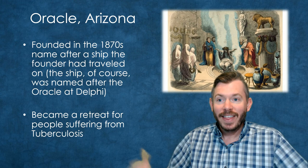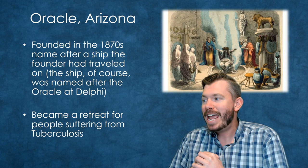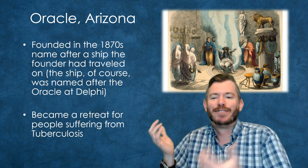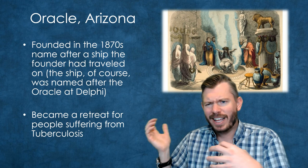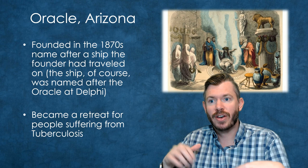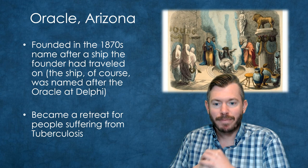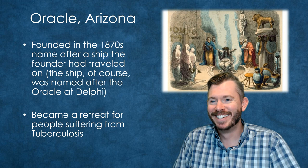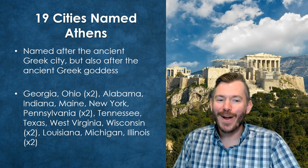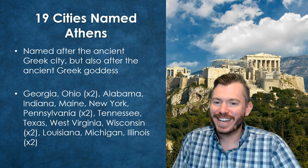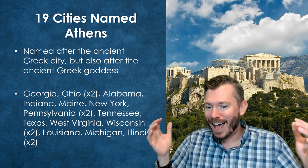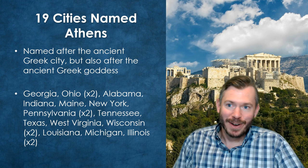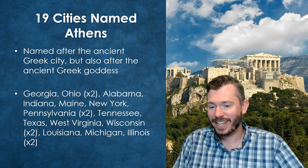We've also got Oracle, Arizona, founded in the 1870s and named after a ship the founder traveled on — which was itself named after the Oracle at Delphi. The idea was that this place, kind of like Tucson, became a retreat for people suffering from tuberculosis, as the southwest was known as a place to go to recover from illness. And we've got 19 cities named Athens in the United States — two of them in Ohio, where I grew up, and a big one in Georgia where the University of Georgia is.